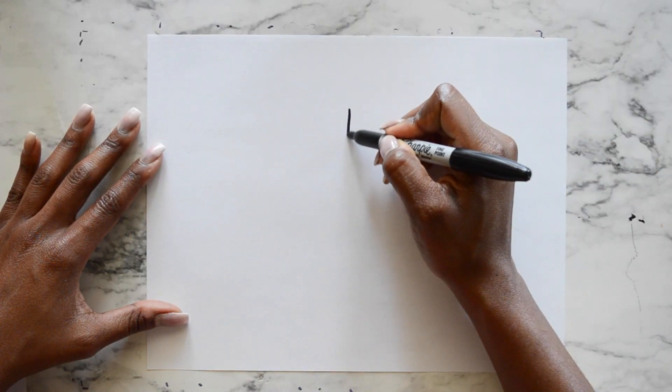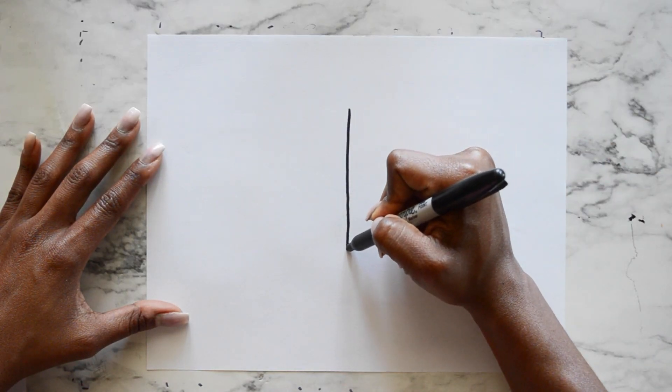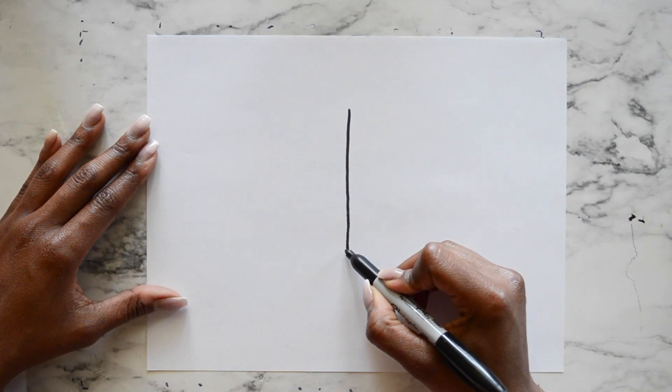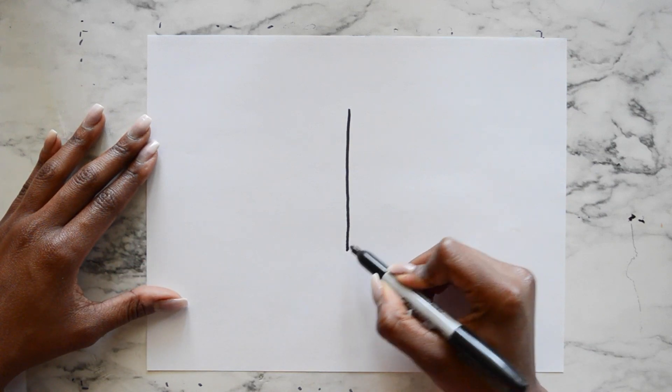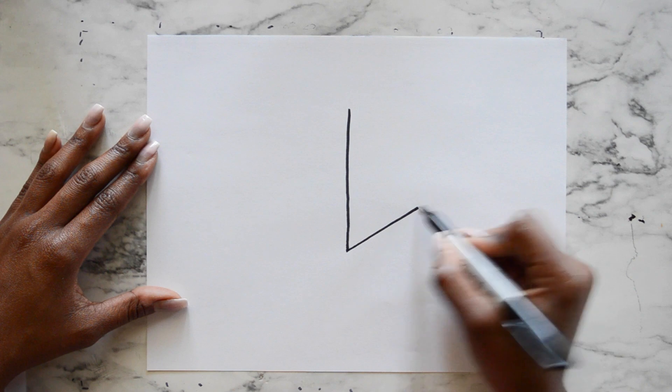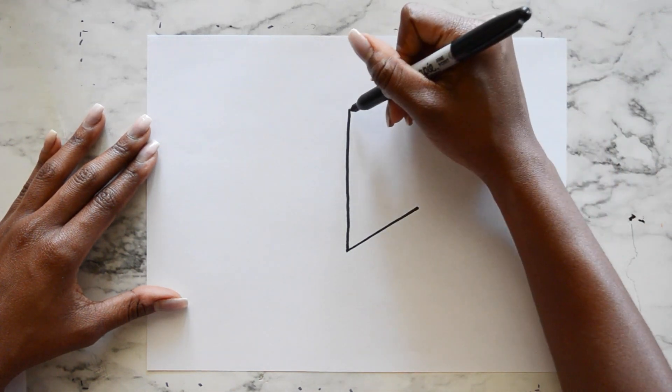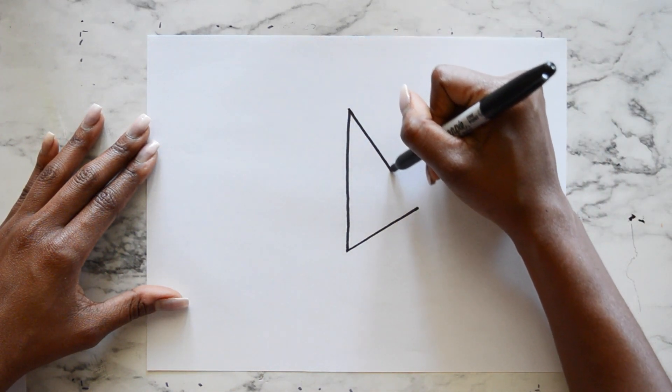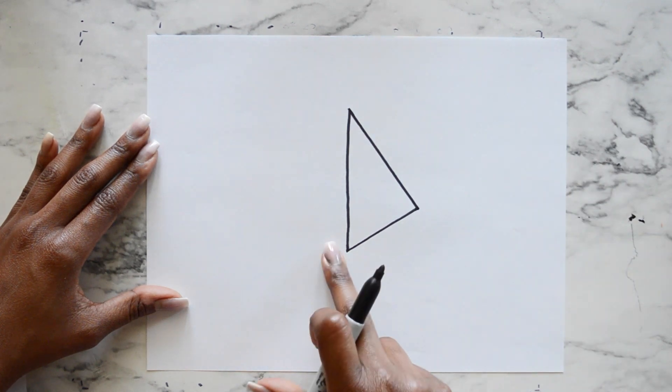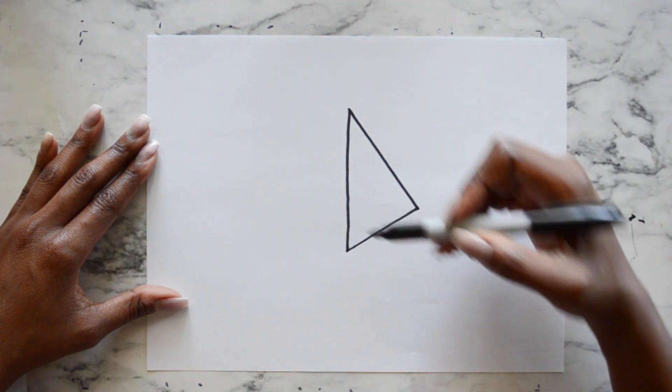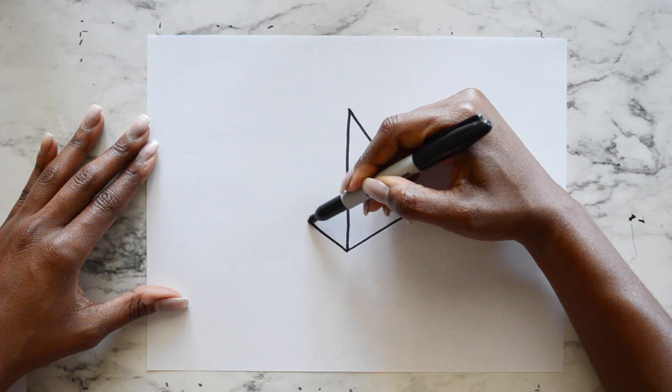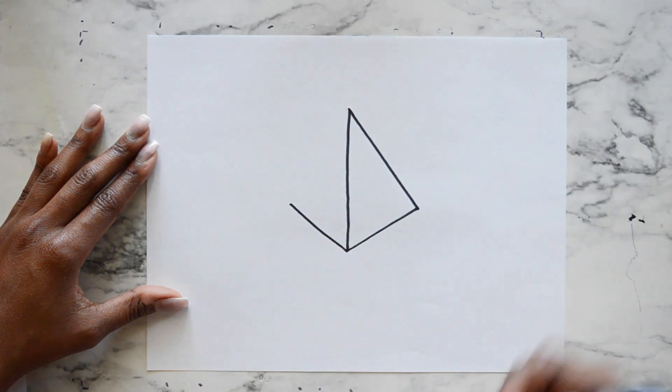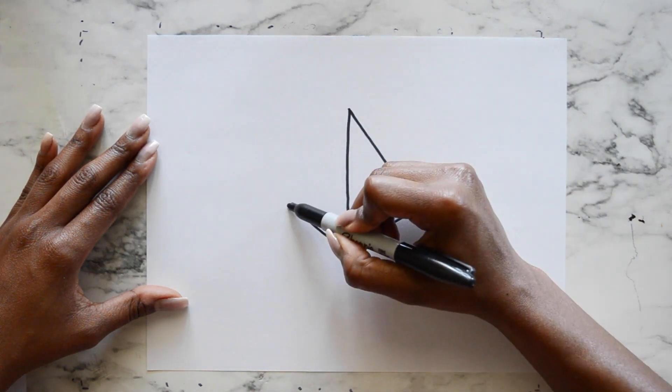To draw a pyramid, you'll start with a vertical line. I'm going to draw a diagonal line from the bottom point up, and then connect these two points with another diagonal line. We'll do the same on this side. Diagonal line up. Connect this point to this point.